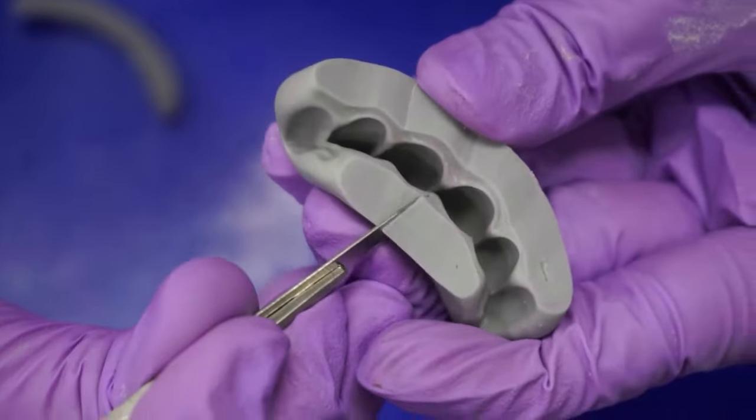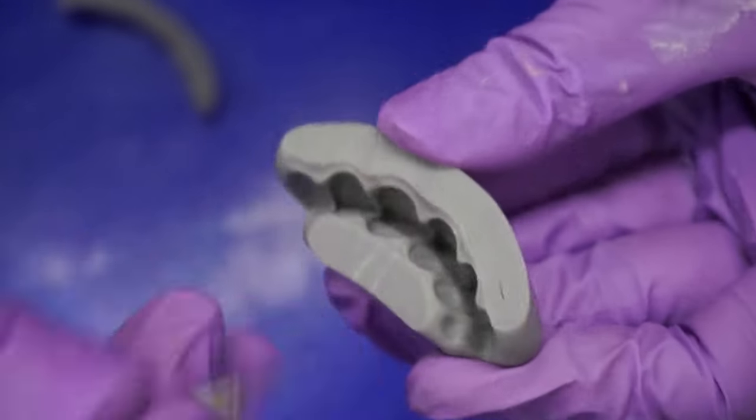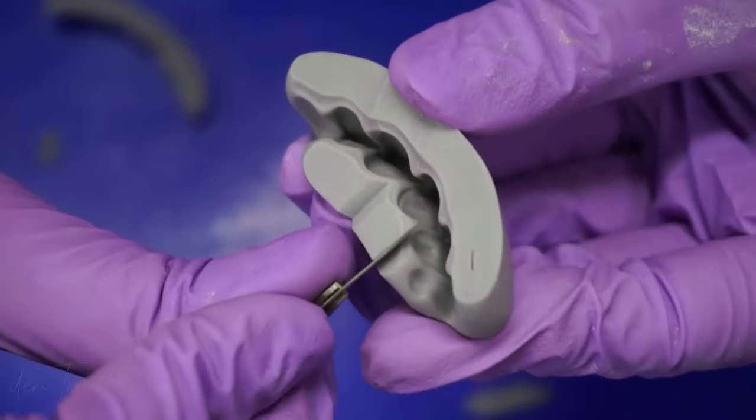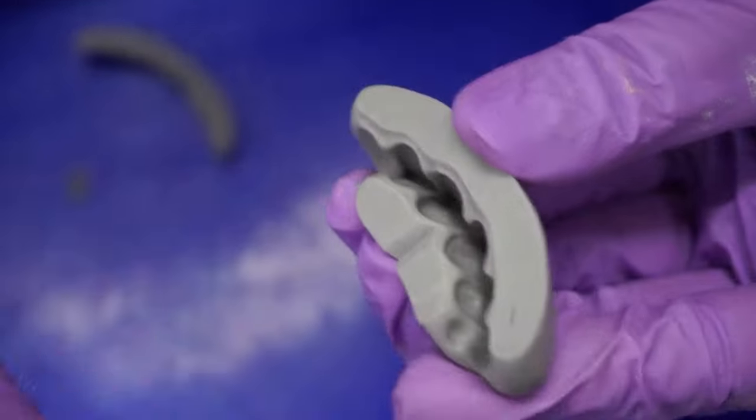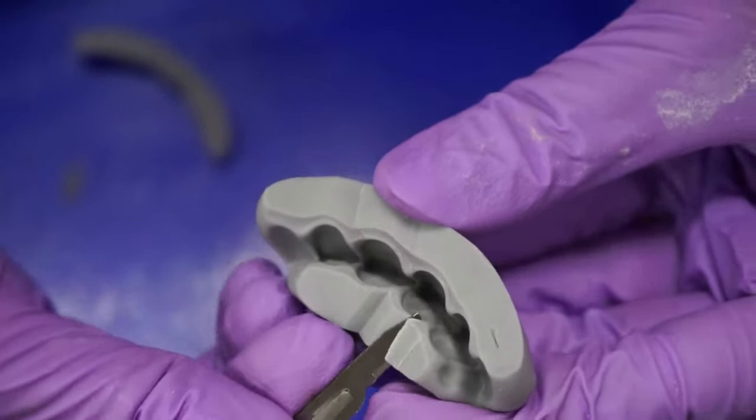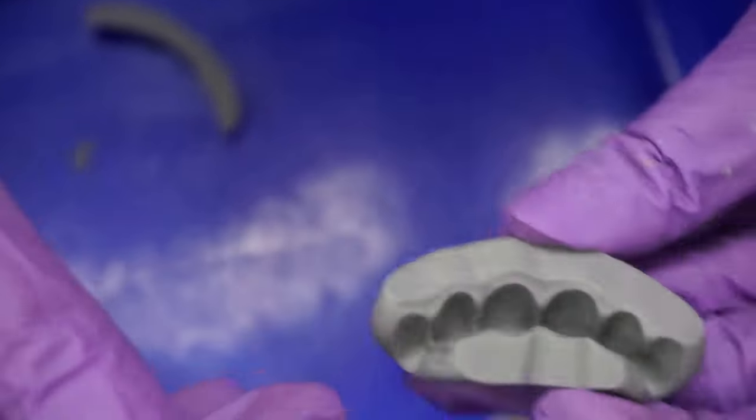Also, it is important to create notches on the index at the gingival embrasure region so that all the excess temporization material pools in that region making it super easy to remove.